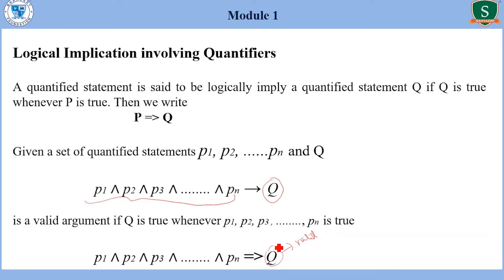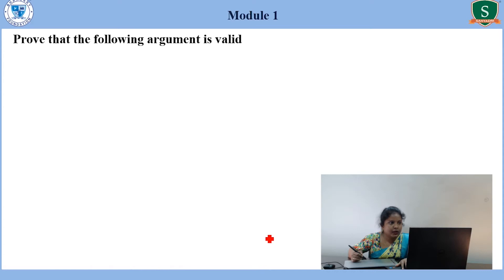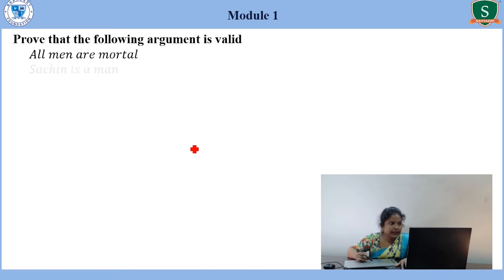We have studied rules of inference and laws of logic in the previous session. The same concepts we are applying here also to check the validity of an argument in quantifiers. Let's solve one problem. Prove that the following argument is valid: All men are mortal. Sachin is a man. Therefore, Sachin is mortal.